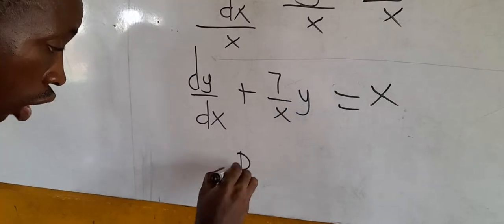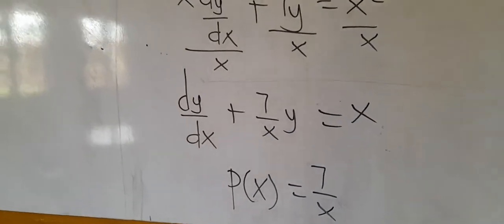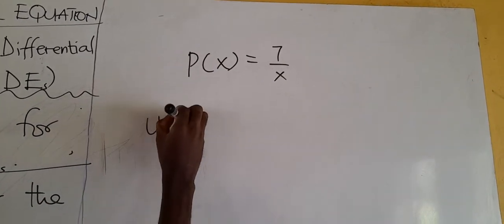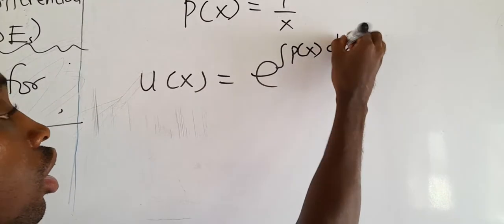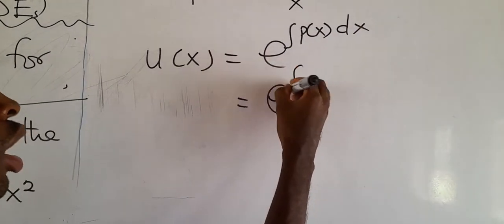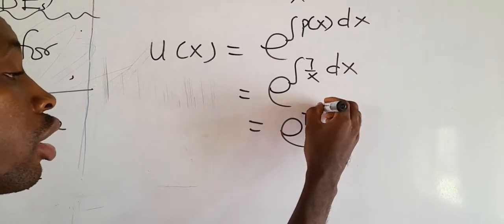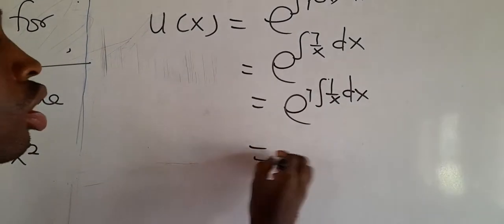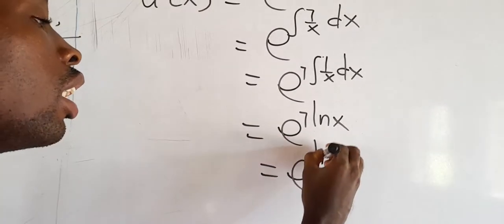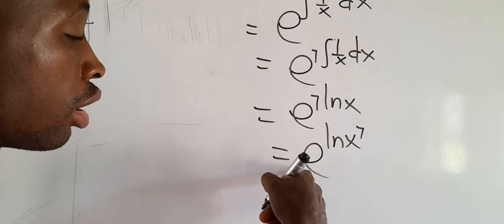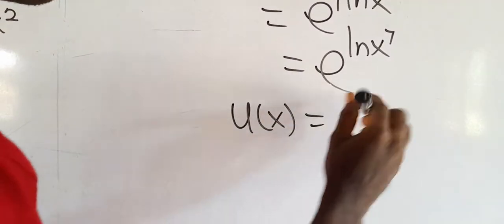So we are having P(x) = 7/x. The integrating factor u(x) = e to the integral of P(x) dx = e to the integral of (7/x) dx. We rewrite this as e to the power of 7 times the integral of (1/x) dx. The integral of 1/x is ln(x), so we rewrite using indices: e to the power of ln(x^7). When ln meets the exponential function, the answer is just x^7. So our integrating factor is x^7.